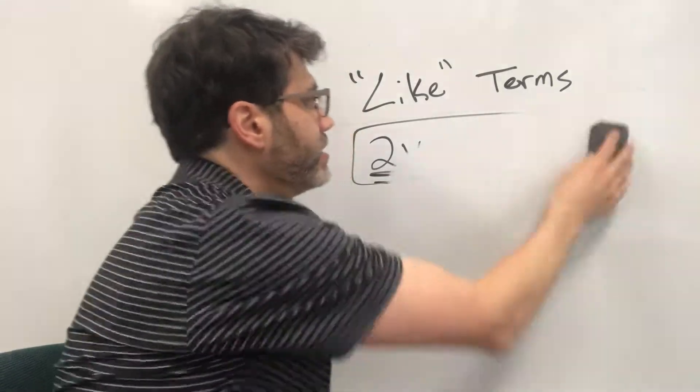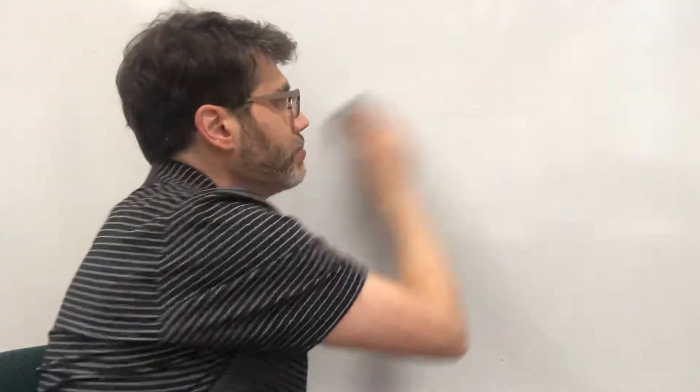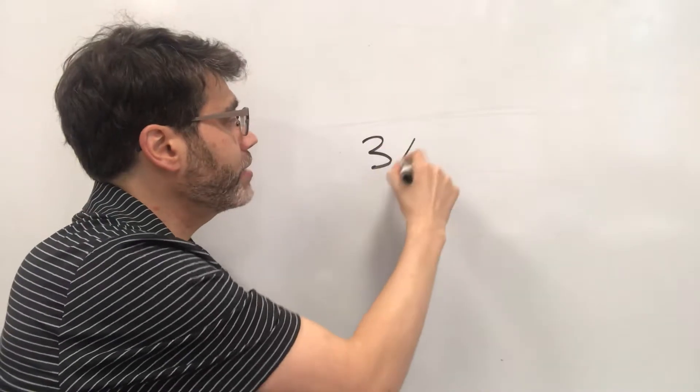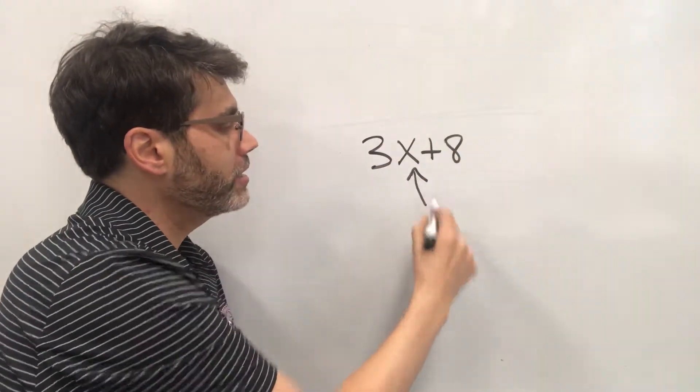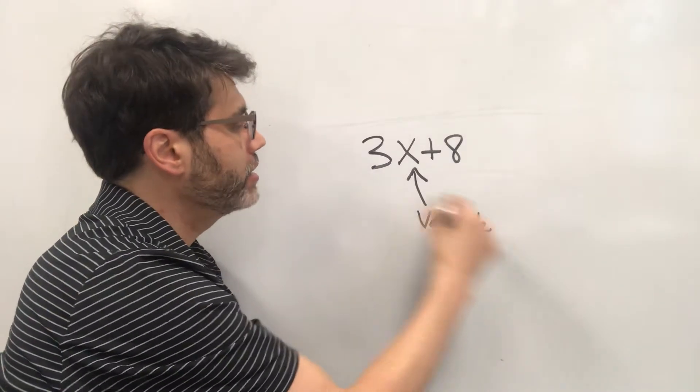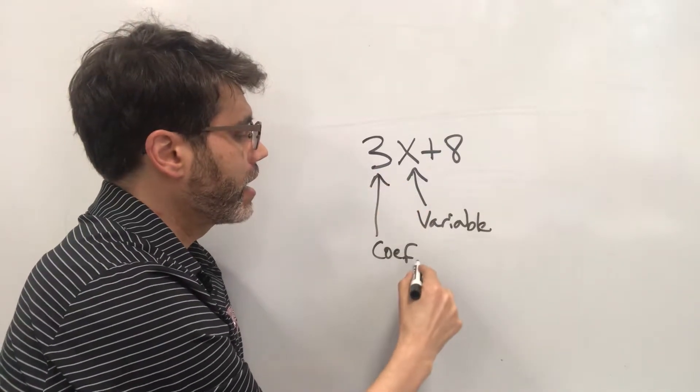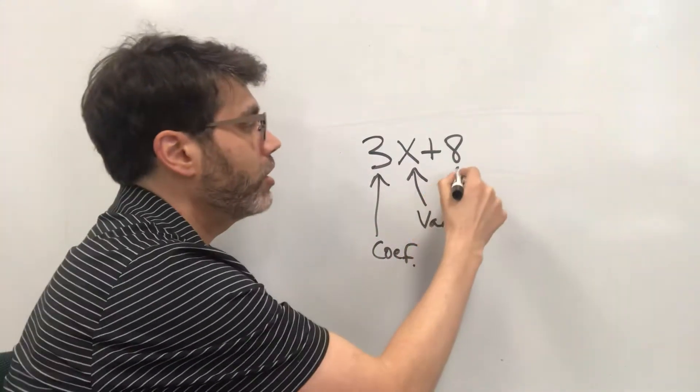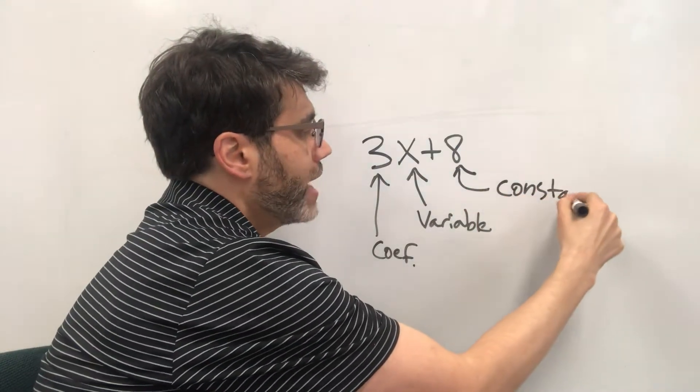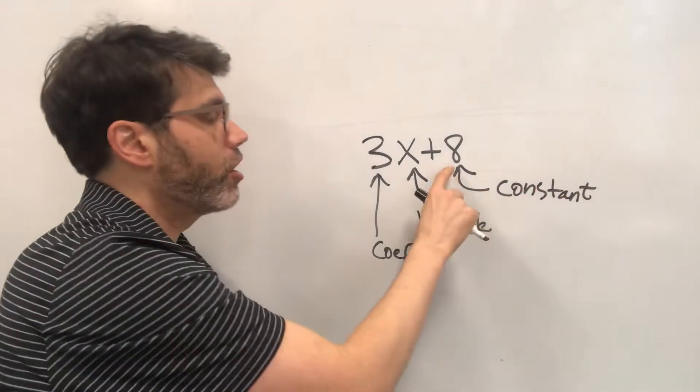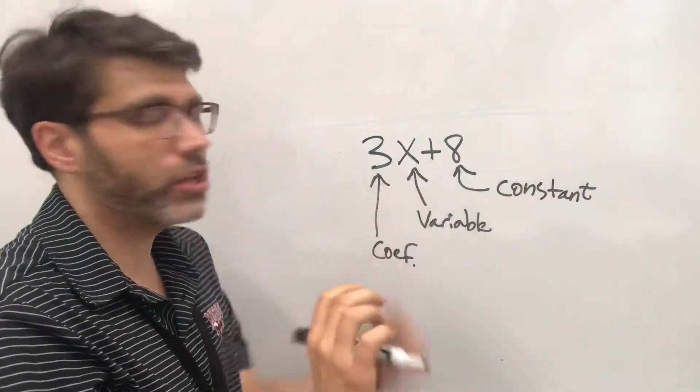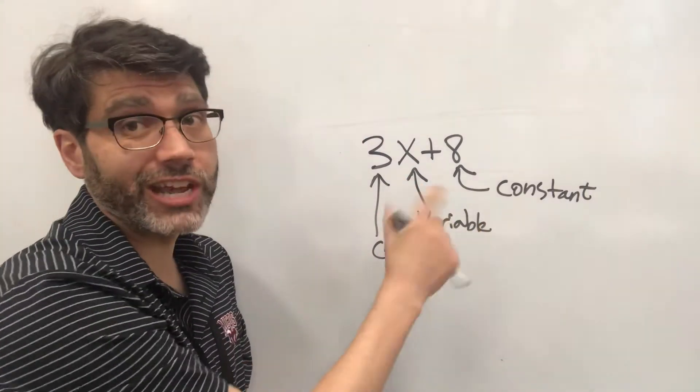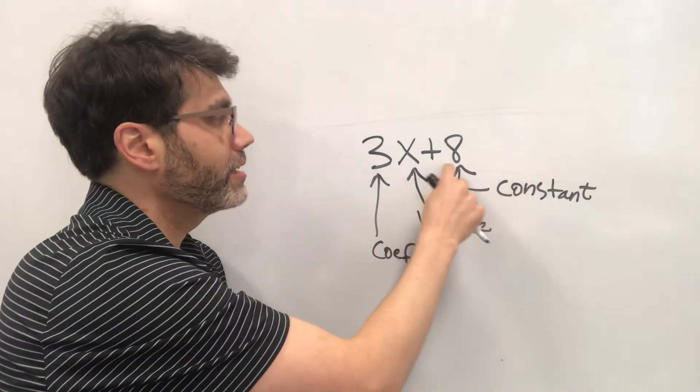Okay so that is the beginning part of what I would like to talk about. Just one more vocabulary word. If we have 3x plus 8 x is called the variable. 3 is called the coefficient. And I'll just abbreviate it. And 8 doesn't have any variable attached to it. So we call that a constant. So any numbers that are without variables we'll just call constants. Because they don't change. As opposed to a variable that could change to be a lot of things. So a constant is a permanent thing.